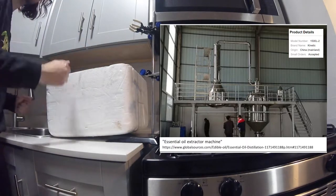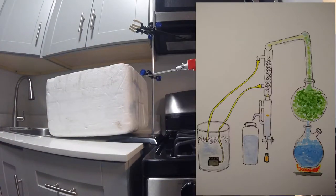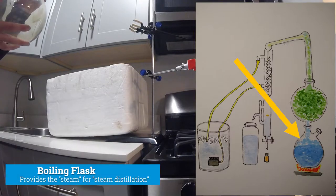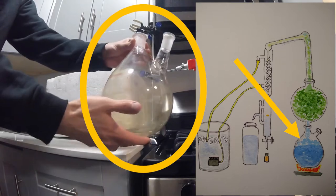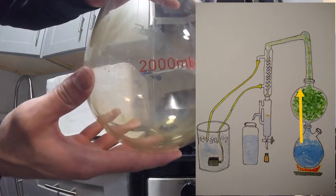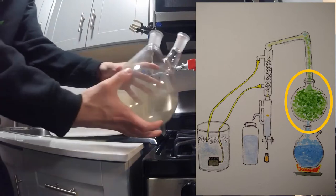The basic process is like this. Steam is produced in the first part of the setup, in our case in the boiling flask full of water. The steam passes upward toward the vessel holding our aromatic plant biomass, in this case spearmint leaves.